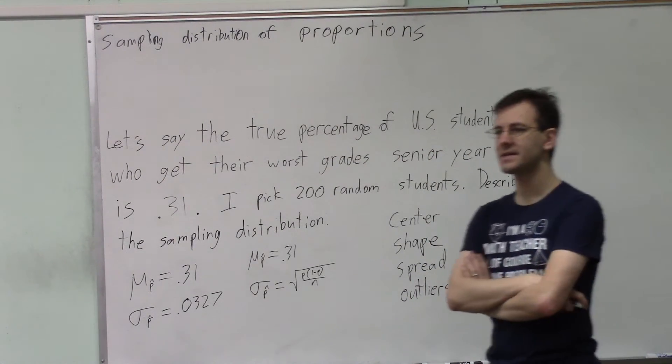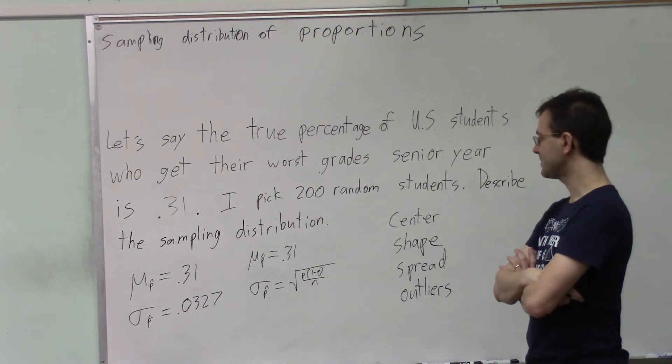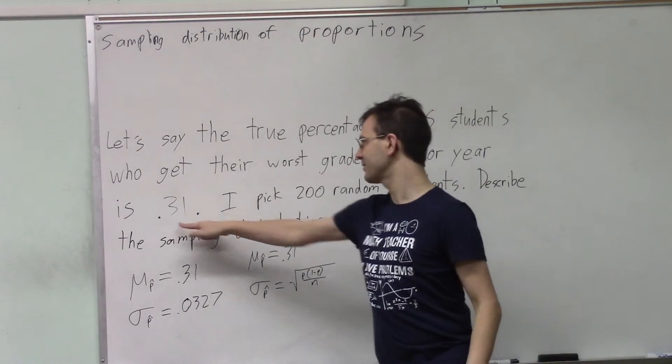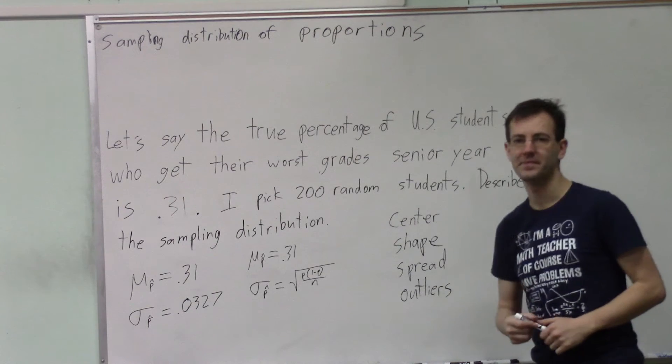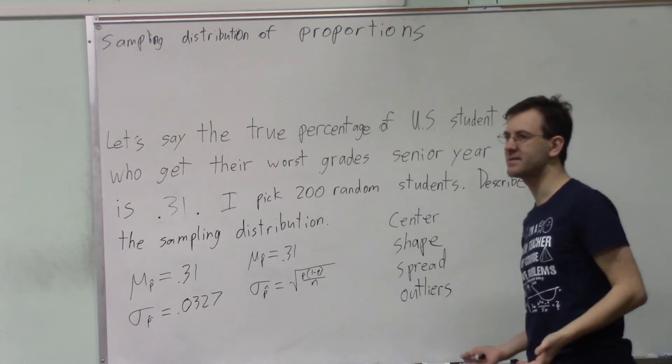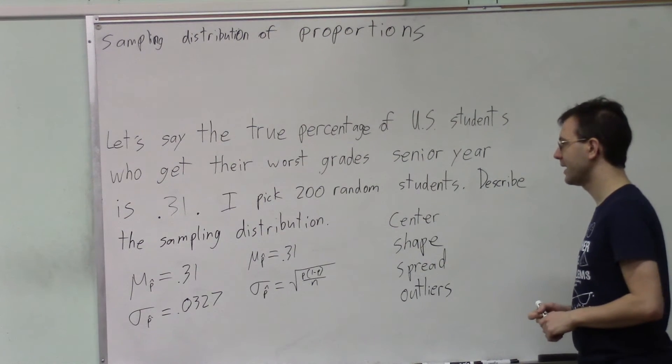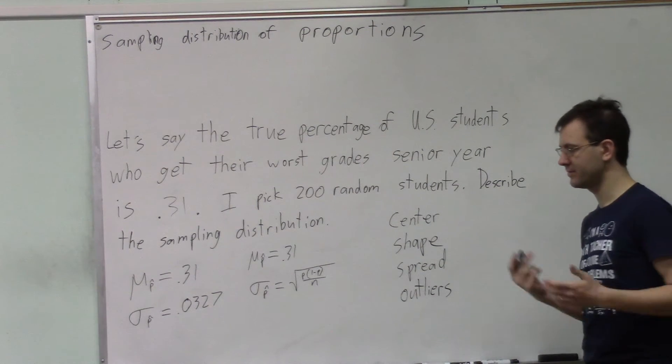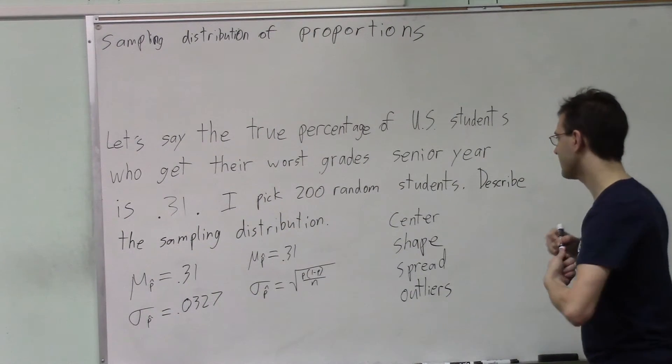In this case, do we expect 10 successes and 10 failures? Well, we expect 31% of them to be successes, they have their worst grade senior year, that would be 62 of them. And we expect the other 138 to not, and both of those are more than 10. So let me make this point.